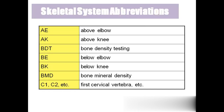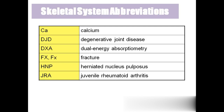Abbreviations: AE — above elbow; AK — above knee; BDT — bone density testing, done for osteoporosis, osteomalacia, and rickets; BE — below elbow; BK — below knee; BMD — bone mineral density; C1, C2, C3, C4 — first, second, third, fourth cervical vertebra; L1, L2, L3 — lumbar vertebrae; CA — calcium; DJD — degenerative joint disease, which includes osteoarthritis, rheumatoid arthritis, and ankylosing spondylitis; DEXA — dual energy absorptiometry.